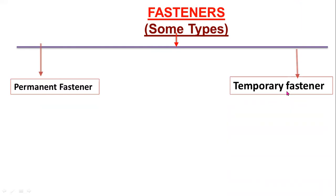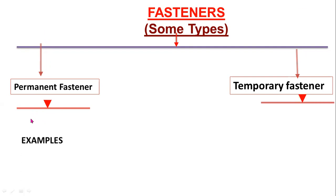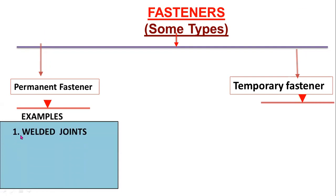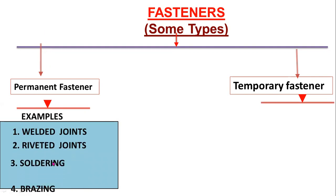Temporary fasteners are removable fasteners. The following are some examples for permanent fasteners: welded joints, riveted joints, soldering, and brazing. These four are the examples for permanent fasteners.